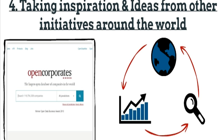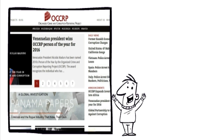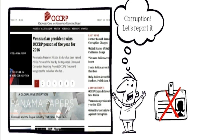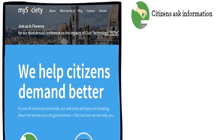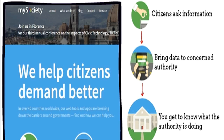Taking inspiration and ideas from initiatives around the world. The first one is Open Corporate. It presents the database of all open companies and encourages them to keep their database open for the general public. Government can also use this database to keep an eye on companies. The second on the list is OCCRP — Organized Crime and Corruption Reporting Project. It's an investigative reporting platform in which reporters report acts of corruption and the organization investigates and sends it to the government to take action against the charged company or individual. The next is MySociety. When a citizen wants information, they can leave a message. It brings the data to the concerned authority and then you will get to know what the authority is doing. It will help the authority to serve the public better.